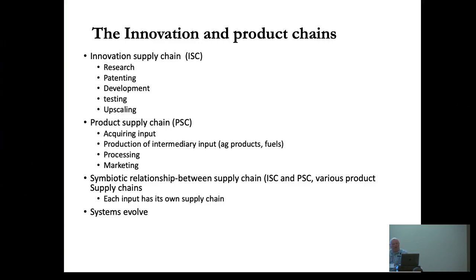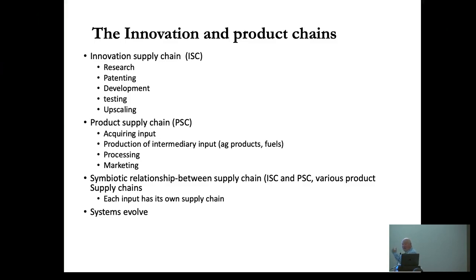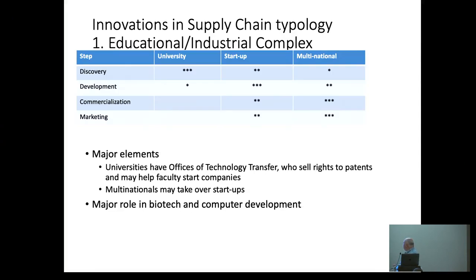Innovation supply chains are the supply chains that result in new products. They have elements like research, patents, development, testing, and upscaling. Once you have an innovation supply chain, you have a product or services supply chain. All these products are changing, the relationship is symbiotic, and the system evolves.